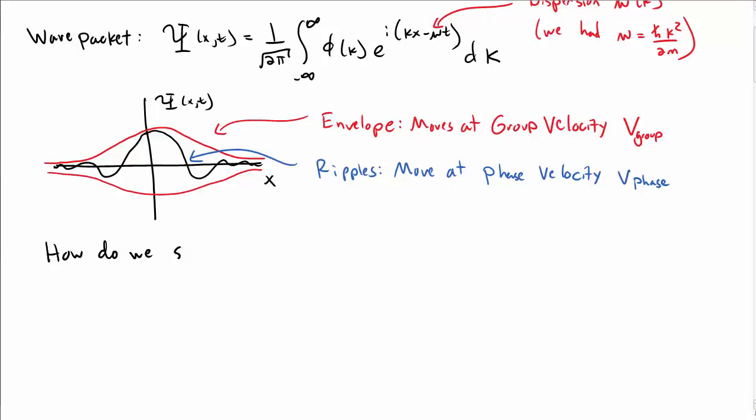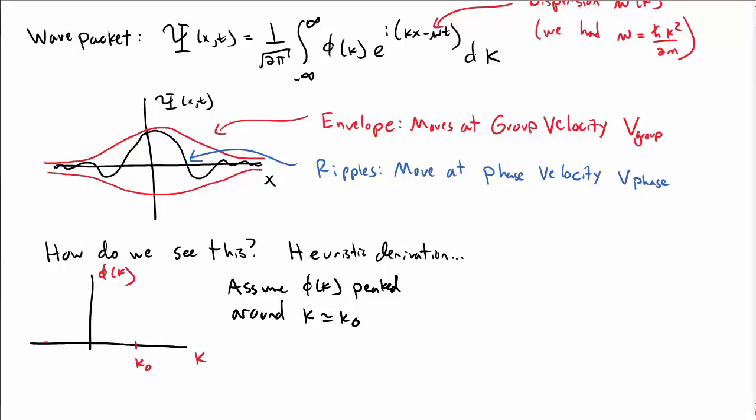Okay, so how do we see this difference between a group velocity and a phase velocity? We're going to consider a heuristic derivation of this. We're going to assume that phi of k in our wave packet is reasonably well peaked around some non-zero k value, just k equals k0. The details aren't super important. The reason I'm peaking it around k0 is what I want to do is Taylor expand omega as a function of k around k0.